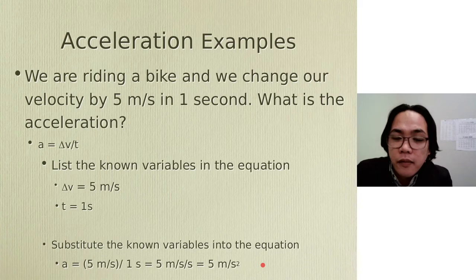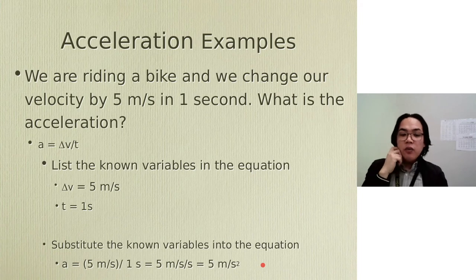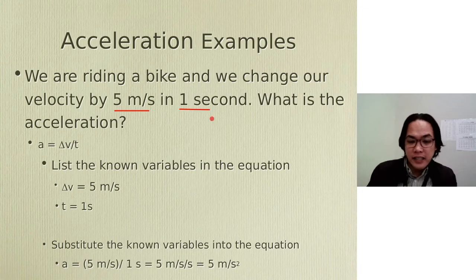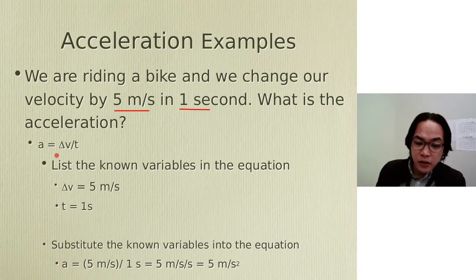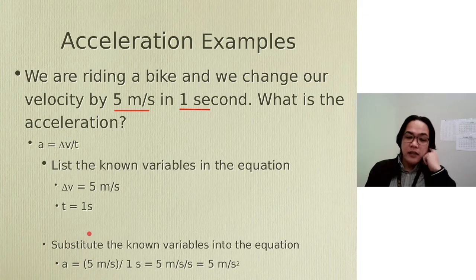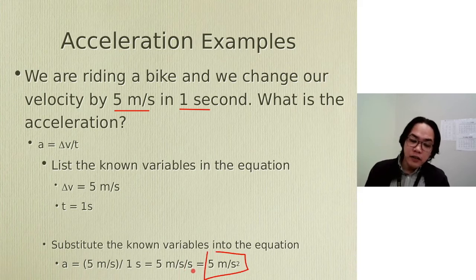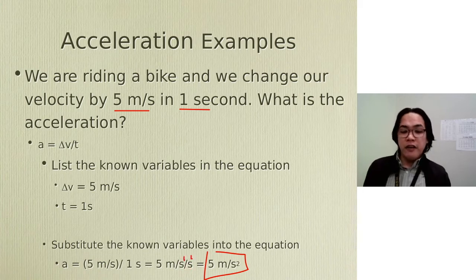Another example: we are riding on a bike and we change our velocity by 5 meters per second in 1 second. What is the acceleration? In this kind of problem, what is given to you is the average change in velocity already — you don't have the final or initial velocity separately, but you have delta V of 5 meters per second and time of 1 second. We still use the formula A equals delta V divided by time: 5 meters per second divided by 1 second equals 5 meters per second per second, or 5 meters per second squared. Both seconds are in the denominator so we add the exponents: 1 plus 1 equals 2.